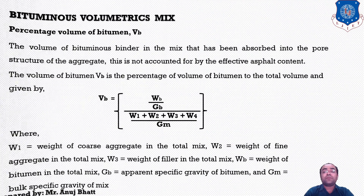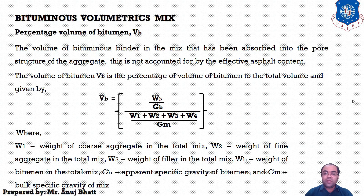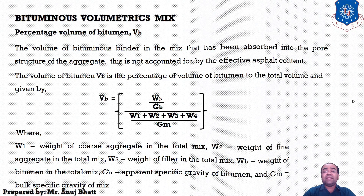The next volumetric is percentage volume of bitumen (vb). This is the volume of bituminous binder in the mix — the portion absorbed into the pore structure of the aggregate is not accounted for by the effective asphalt content. The volume of bitumen as a percentage of the total volume is given by: vb = (wb/gb) / [(w1 + w2 + w3 + wb) / gm]. All notations have been described above. By doing this calculation, you will get the percentage volume of bitumen in the mixture.